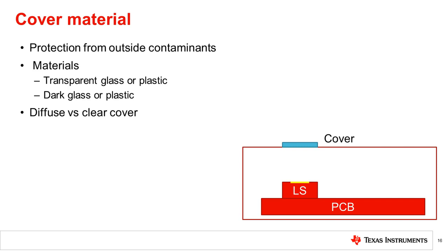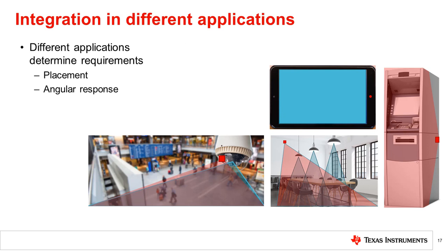We will now discuss how to determine target angular characteristics and sensor placement for a system. Different applications such as display brightness control, lighting control, day-night detection, and tamper detection all have different light sensor positioning and angular requirements. For example, display brightness control requires a measure of light intensity in the same area as the display, whereas lighting control for a building will require a measure of light intensity in the area illuminated by the light sources. Both light sensor placement within a system and the angular characteristics of the system will determine the area in which light is measured. Thus, optimal sensor placement and angular characteristics will vary between applications.